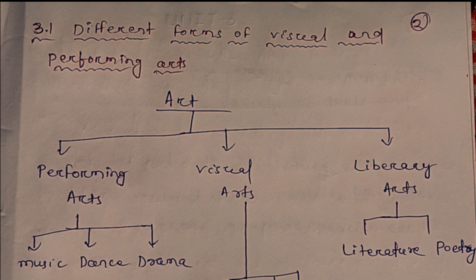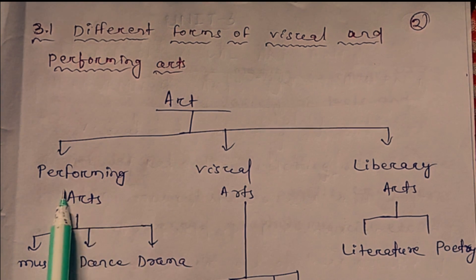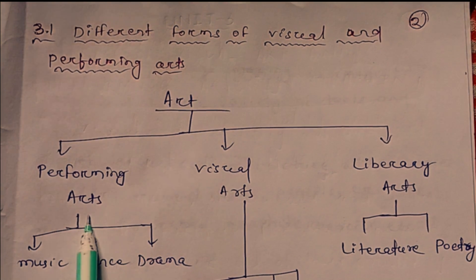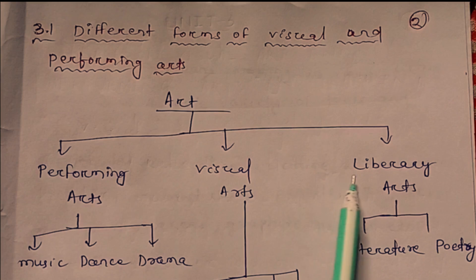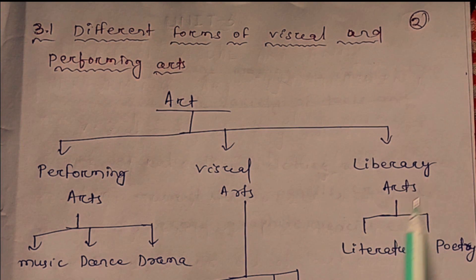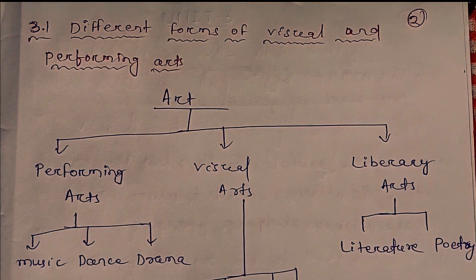There are many different forms of visual arts and performing arts. The main categories include performing arts, visual arts, and liberal arts. Performing arts includes music, dance, and drama.